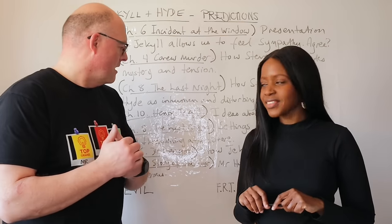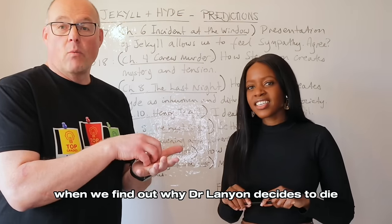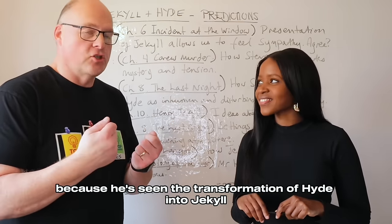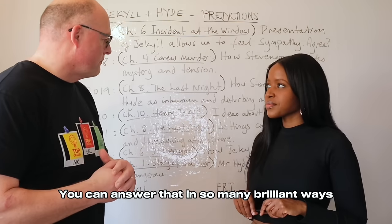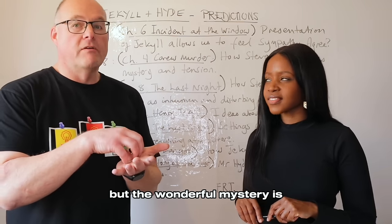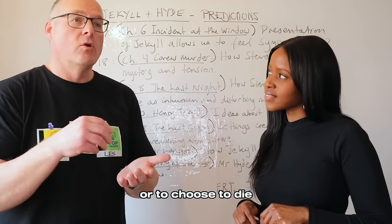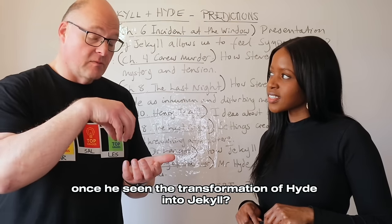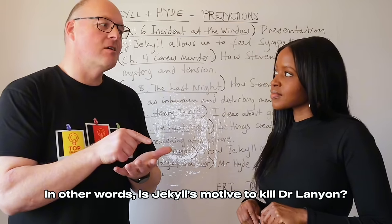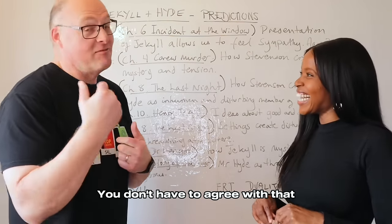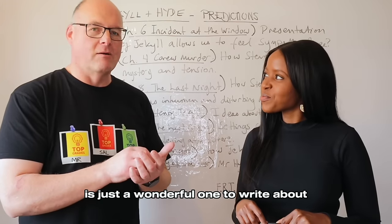In 2022, the extract came from chapter six, focusing on Dr. Lanyon — when we find out why Lanyon decides to die, having witnessed the transformation of Hyde into Jekyll. The question was how Jekyll is presented as mysterious. The wonderful mystery is why does Lanyon choose to die once he's seen that transformation? And does Jekyll plan that — in other words, is Jekyll's motive to kill Dr. Lanyon? That's an interpretation I really like, though you don't have to agree with it. The mystery of Jekyll is just a wonderful one to write about.